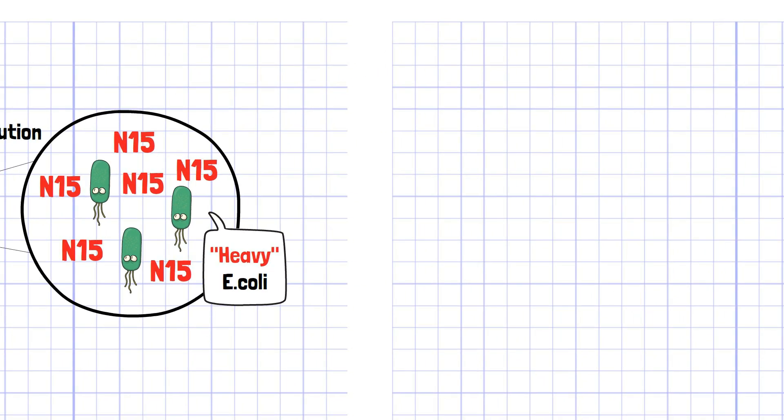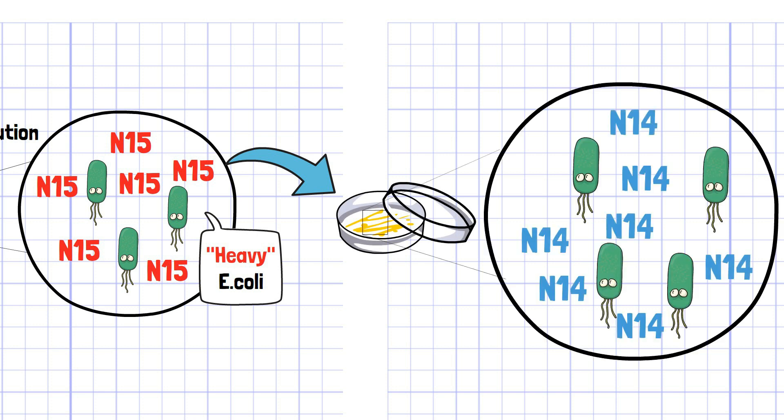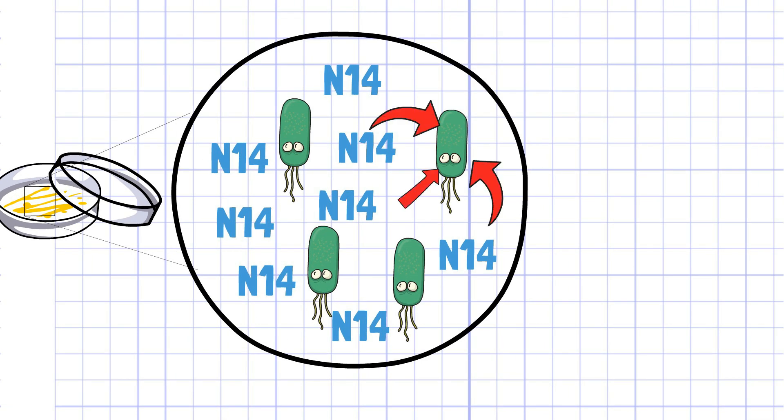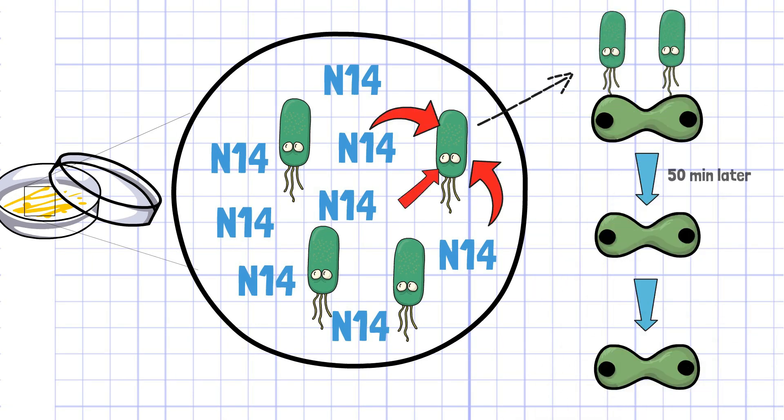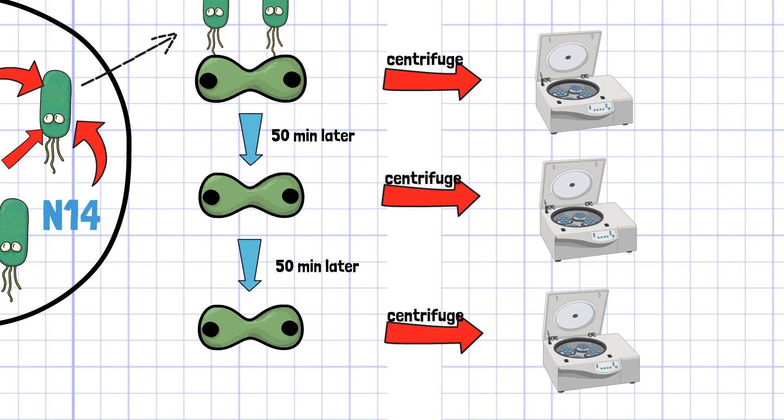In the next procedure, the heavy E. coli was transferred to the medium that contains nitrogen-14 only. E. coli taken surrounding nitrogen-14 by creating new cells by cell division every 50 minutes. After each cell division, the cultured E. coli are separated by their weight using cesium chloride gradient centrifugation. Please refer to the previous video for cesium chloride centrifugation technique.